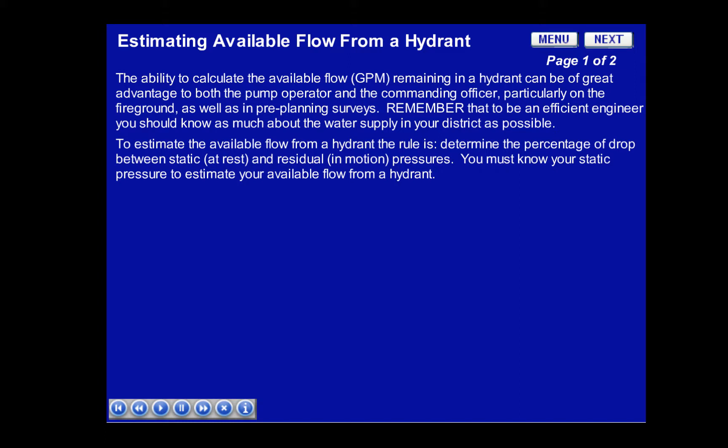To estimate the available flow from a hydrant, the rule is to determine the percentage of drop between static — at rest — and residual and motion pressures. You must know your static pressure to estimate your available flow from a hydrant.